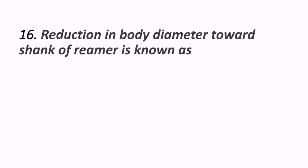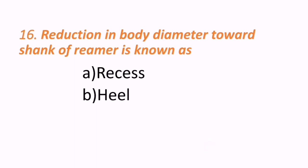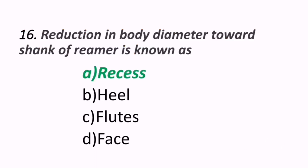Sixteenth question: reduction in body diameter towards the shank of reamers is known as what? Options are recess, heels, flutes, or face. The correct answer is recess. A is the correct answer.